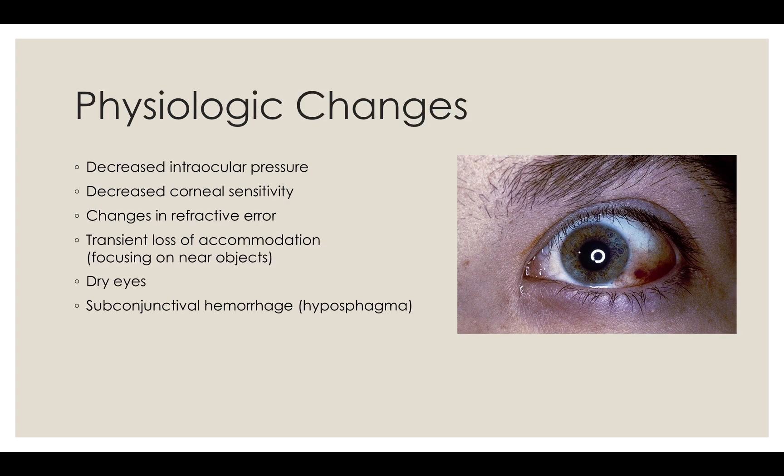During pregnancy, particularly in the second half, there is a decrease in intraocular pressure in healthy eyes. In patients with ocular hypertension, this decrease may be even larger. This change may stem from increased aqueous outflow, decreased episcleral venous pressure, decreased scleral rigidity, and generalized acidosis during pregnancy. Pressure is usually returned to pre-pregnancy levels by two months postpartum.